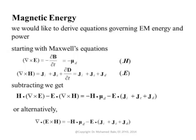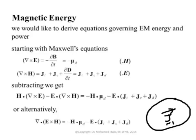Now, what we will do is move forward by assuming we are talking about a specific volume. We assume there is a specific volume, and inside this volume we have the impressed current — this is the source of all the energy. It can be an antenna or some other source creating energy, and this electromagnetic energy will start to radiate through space. So we would like to derive expressions for the different powers here.